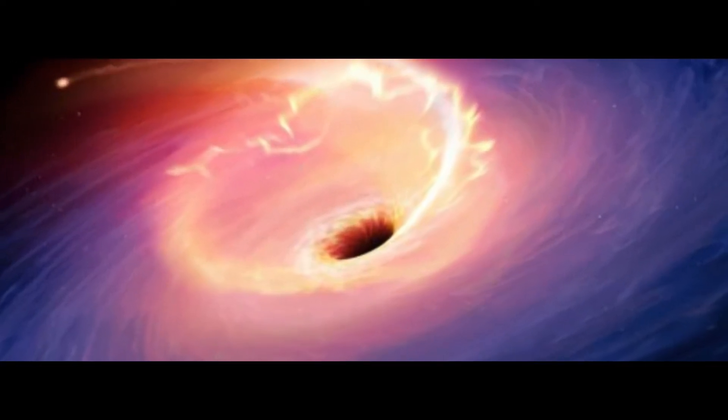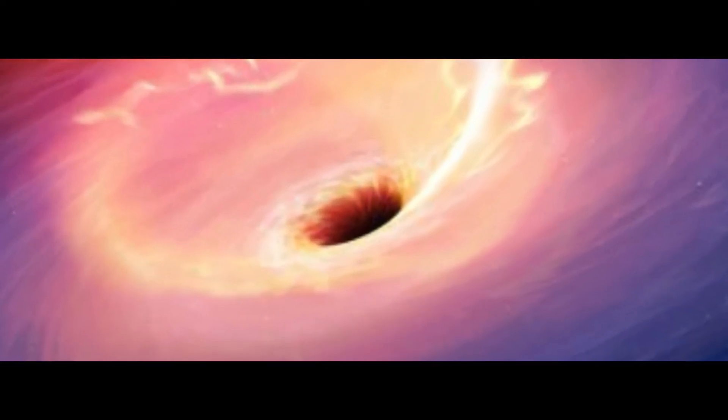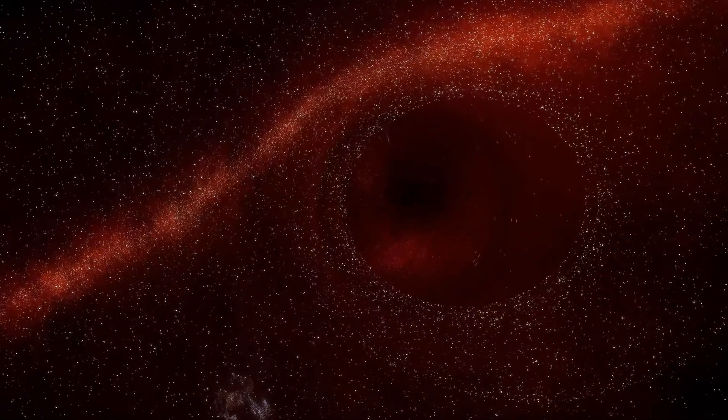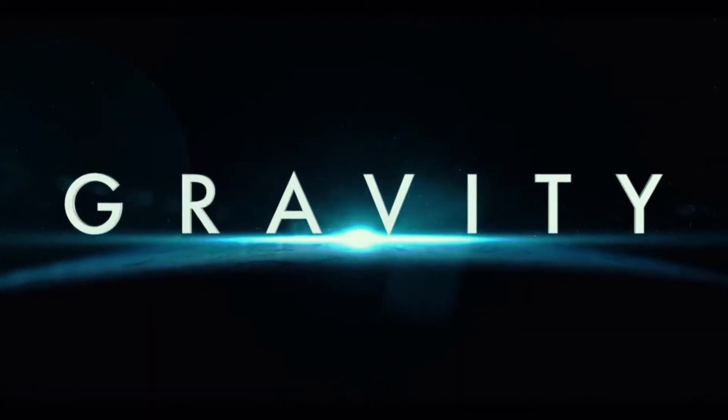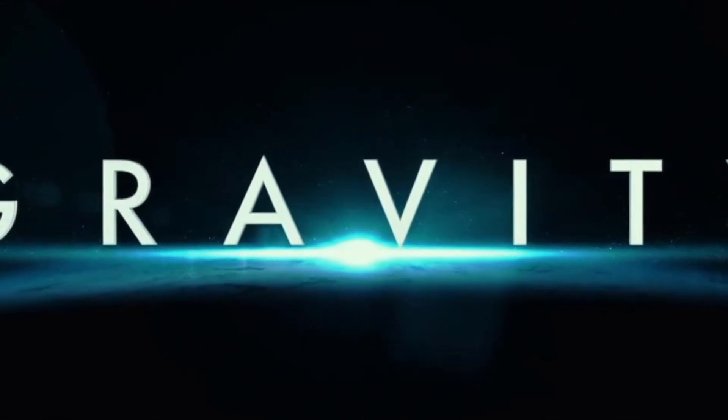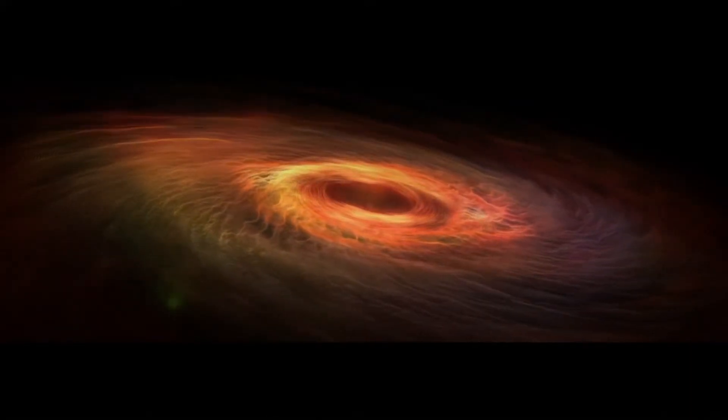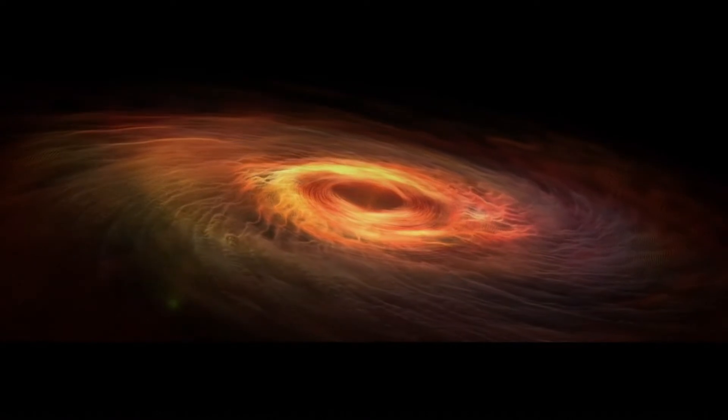But if we choose the supermassive black hole, which is millions of times more massive than our sun, like Sagittarius A-star, which is 4 million times greater than our sun, then the force of gravity exerted by them will be equally spread throughout our body, so we may get nearer to the event horizon or even pass into the black hole.